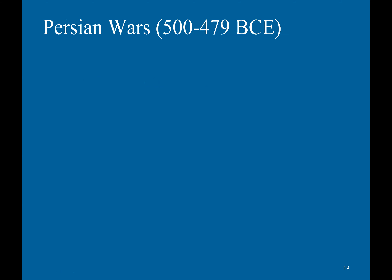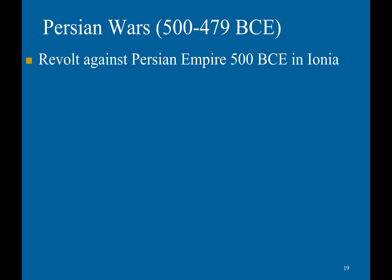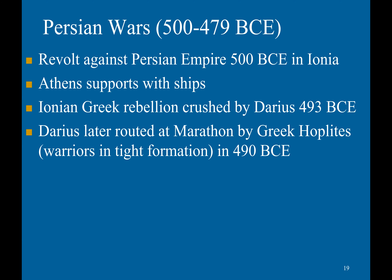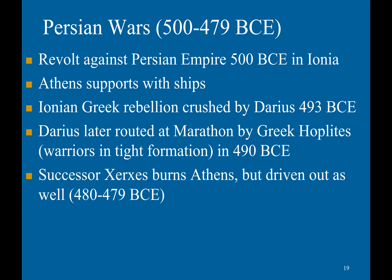The Persian Wars lasted from 500 to 479 BCE. Ionian Greeks — Greeks living in Anatolia — revolted against the Persian Empire around 500 BCE. Athens supported the rebellion with ships, but the rebellion was crushed by Darius in 493 BCE. However, Darius was later routed at the Battle of Marathon by Greek hoplites in tight formation in 490 BCE.